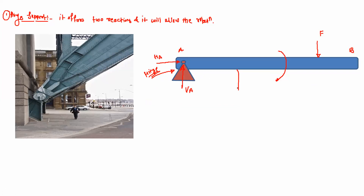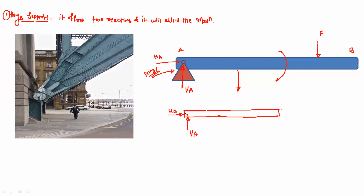When we draw the free body diagram for beam AB, at point A — since this is a hinge joint — we show two reactions: VA and HA. This is the representation and free body diagram for the hinge joint.